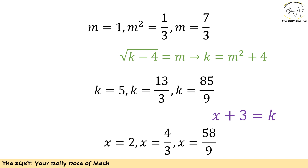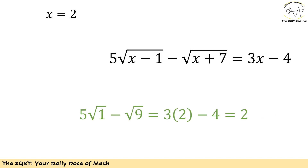Now the question is whether all these values are valid. To verify, we put each x back into the original equation. For x equals 2: radical(x minus 1) is radical(1), radical(x plus 7) is radical(9), and 3x minus 4 is 2. Then 5 times radical(1) minus radical(9) equals 5 minus 3 equals 2, which is correct. So x equals 2 is valid.